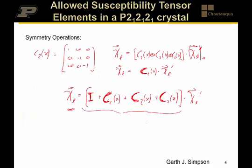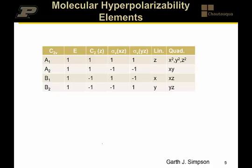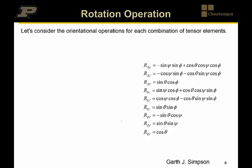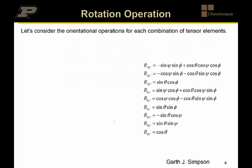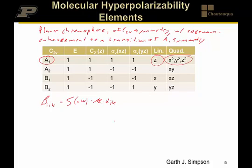So we have a couple of different ways of handling what's going on in the crystal tensor. How do we then approach the molecular response? Let's assume a couple of things: first, that we have a planar chromophore of C2v symmetry, and that there is one dominant transition giving rise to the nonlinear optical response, and that dominant transition has a1 symmetry. We can take advantage of the fact that beta_ijk, when resonant at the second harmonic, equals mu_i times alpha_jk, where alpha_jk describes the two-photon absorption matrix element and mu the transition moment.